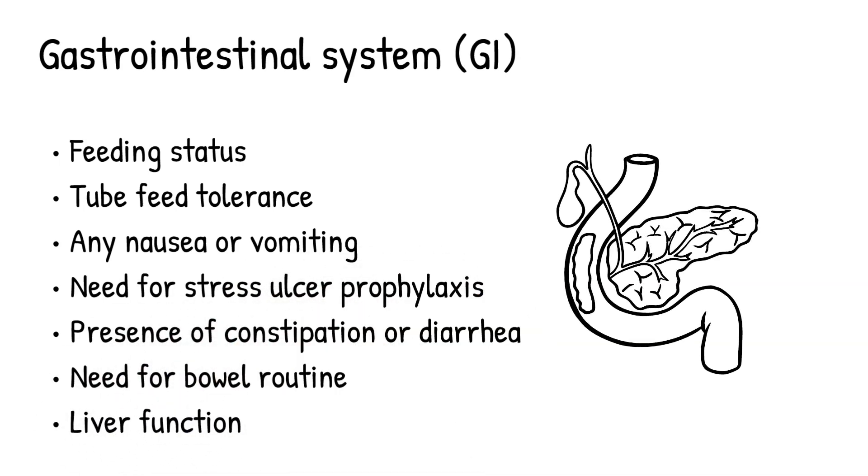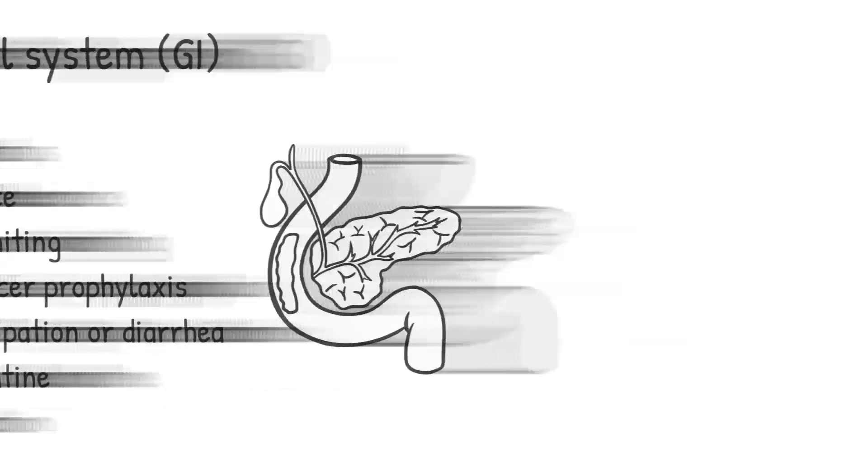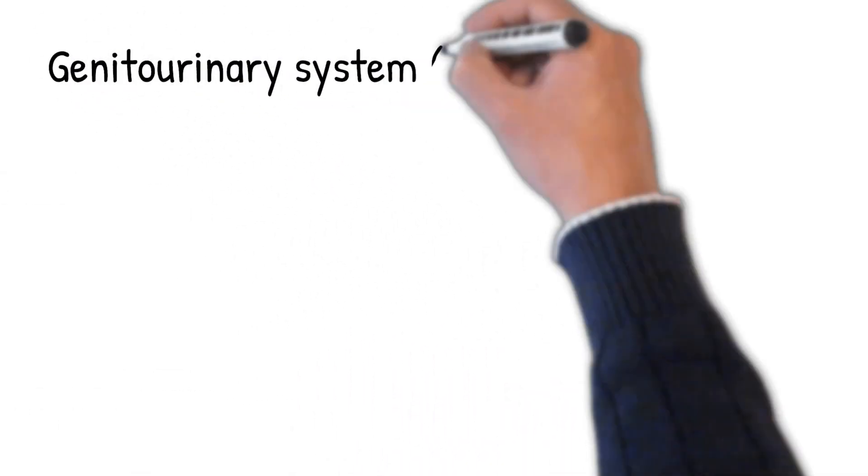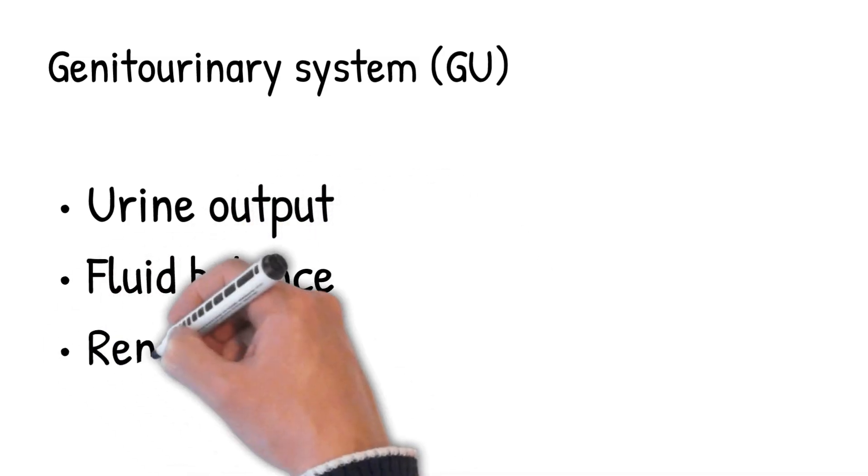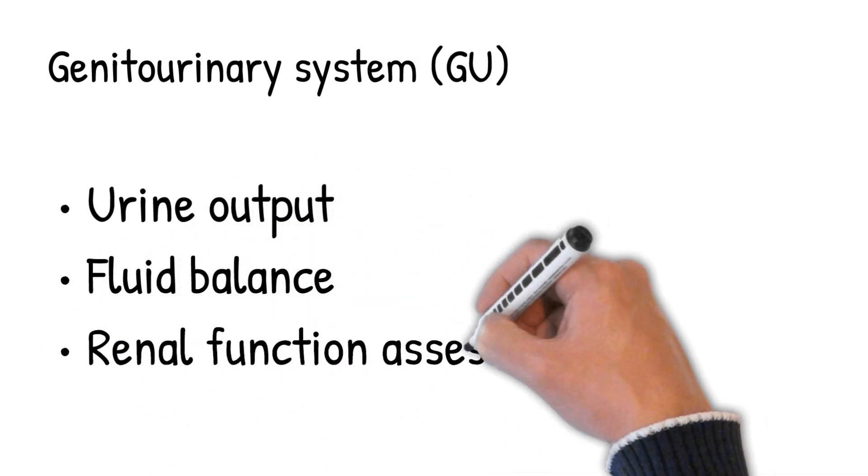Followed by genitourinary system GU. You check the kidney function, the urine output, fluid balance, and assess the renal function on a daily basis.